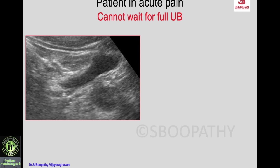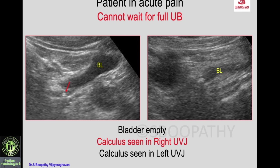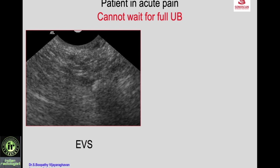A patient in acute pain and the bladder is not full — you cannot wait for a full bladder to make the diagnosis. Here you see the bladder is empty, but still you are able to see the ureter and there is a calculus at the ureterovesical junction on the right side. In another similar case, the bladder is almost empty but you still see a calculus at the UVJ with the ureter seen proximally. If bilateral, the patient may be in anuria or oliguria. Even with acute colic and an empty bladder, calculus may be seen.